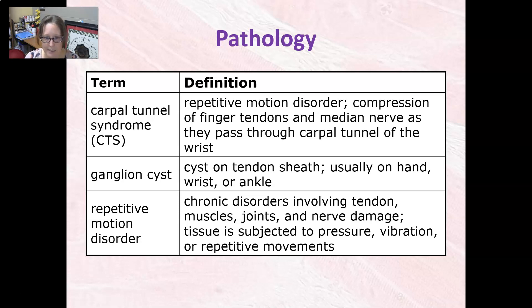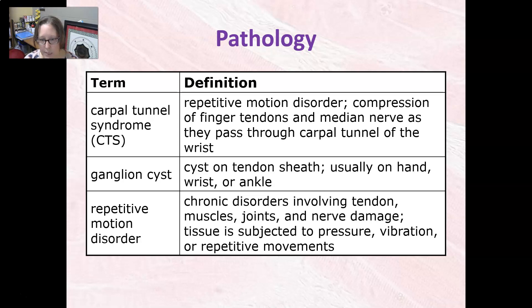A ganglion cyst is a cyst on a tendon sheath, usually on the hand, wrist, or ankle. A repetitive motion disorder is a group of chronic disorders that involve the tendon, muscles, joints, and nerve damage. The tissue is subjected to pressure, vibration, or repetitive movements, and that's what causes the damage over time.